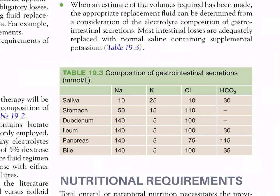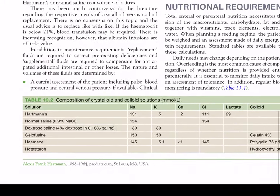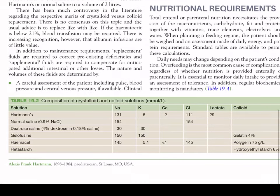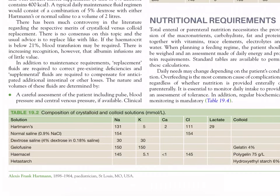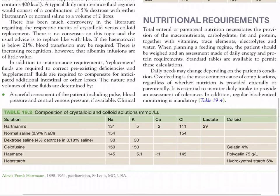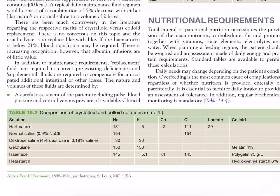Table 19.3 shows the composition of gastrointestinal secretions in mmol/liter. Table 19.2 shows composition of crystalloid and colloid solutions in mmol/liter. Hartmann's solution contains sodium 131, potassium 5, calcium 2, chloride 111, lactate 29. Normal saline (0.9% NaCl): sodium 154, chloride 154. Dextrose saline (4% dextrose/0.18% saline): sodium 30. In colloids: polygelatin 75 g/liter (Gelofusine: gelatin 4%) and hydroxyethyl starch 6% (Hetastarch).